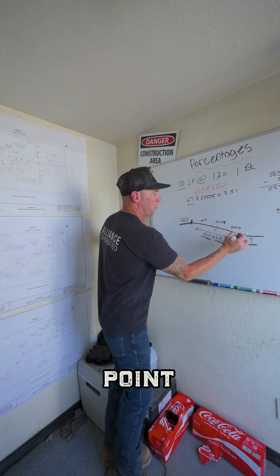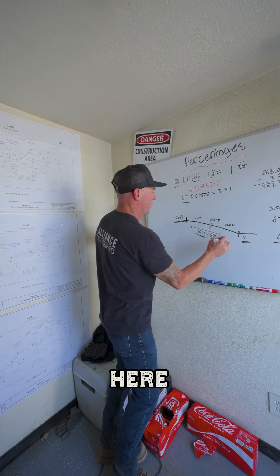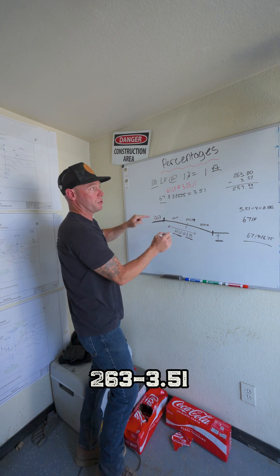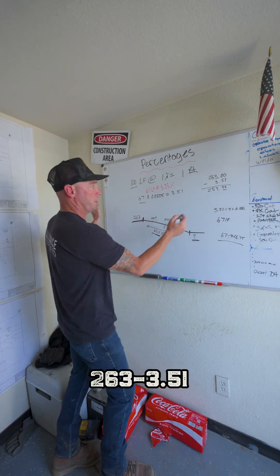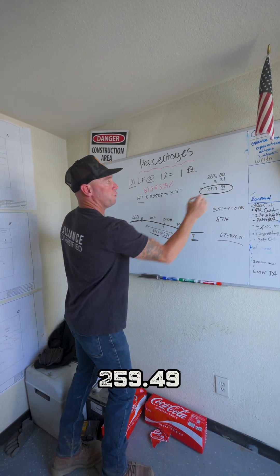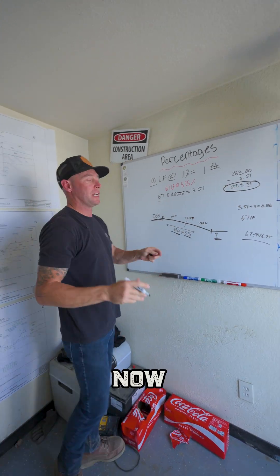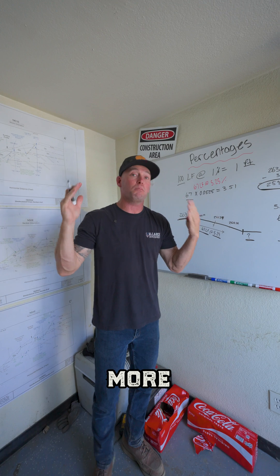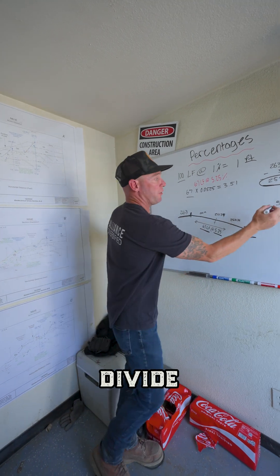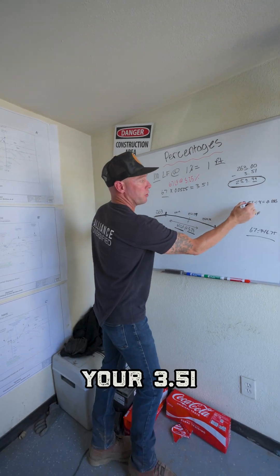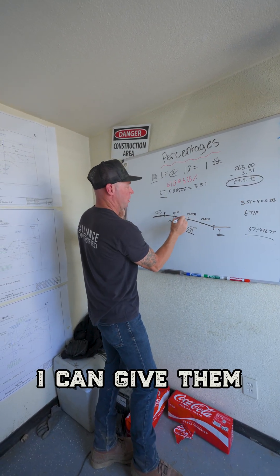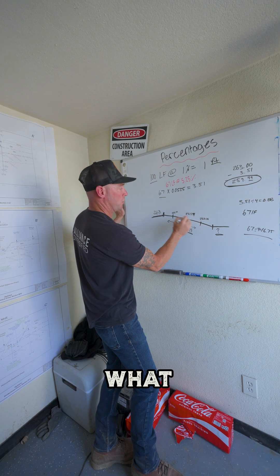So I know from this top point down here, it's just 263 minus 3.51, which gives me 259.49. Now say you need to give more information — let's divide out your 3.51 divided by four so I can give them quarters.